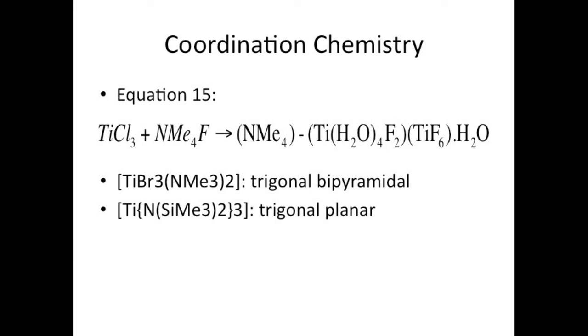and ionic complexes can be produced by reduction reactions. For example, titanium trichloride reacts with NMe4F to produce NMe4[TiH2O4F2][TiF6]·H2O. Some complexes of titanium-3 showed that its molecular geometry is non-octahedral. TiBr3(NMe3)2 has geometry of trigonal bipyramidal and Ti[N(SiMe3)2]3, that is trigonal planar due to bulky ligands that is difficult to occupy the spacing around the titanium-3.